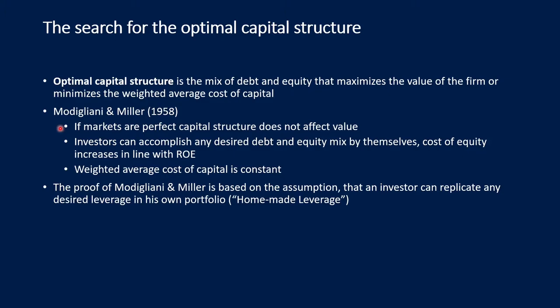Under perfect markets, investors can accomplish any desired debt and equity mix by themselves in their own portfolio — I will show this in an illustrative example. Modigliani and Miller stated that the weighted average cost of capital is constant. Their proof is based on the assumption that an investor can replicate any desired leverage in their own portfolio, by borrowing money or investing in bonds.